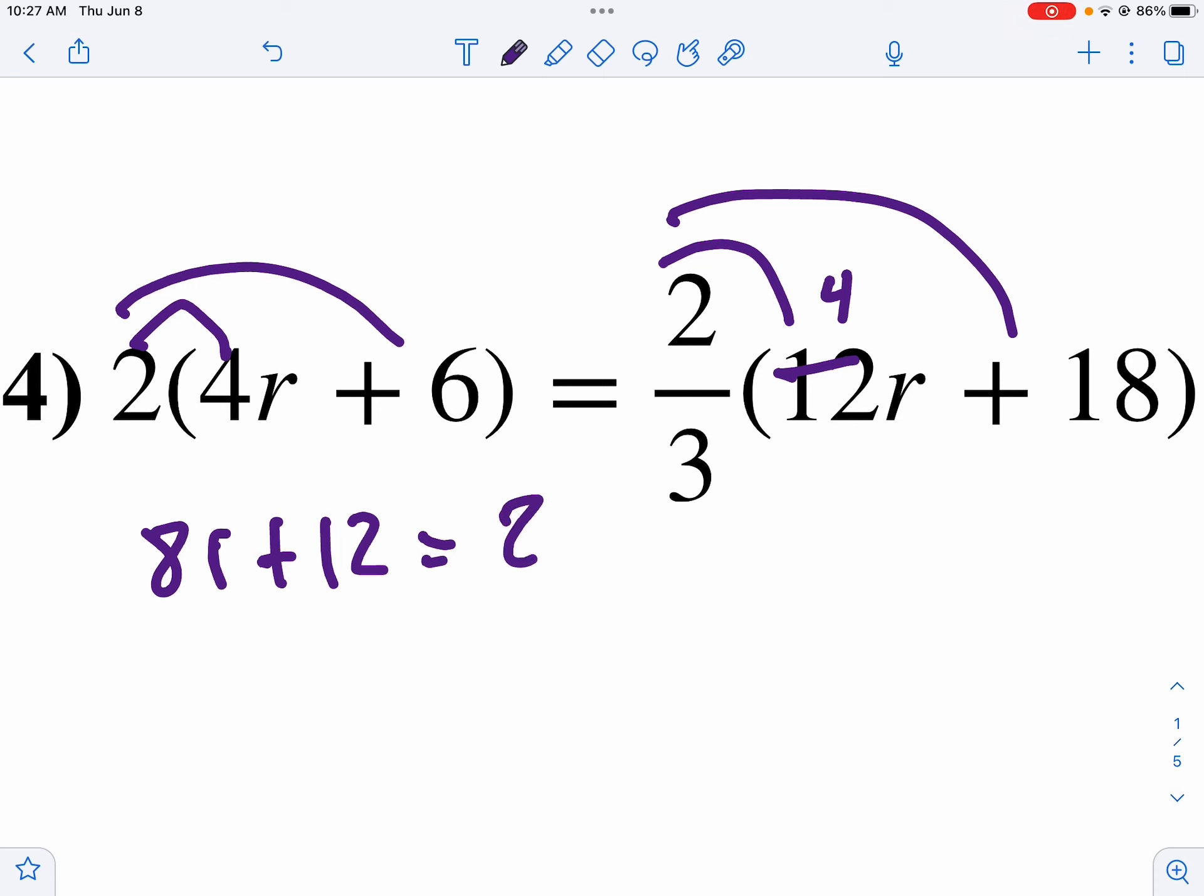Because notice they kind of get rid of themselves. 3 goes into 12 four times, so 4 times 2 is 8r. 3 goes into 18, 6 times, 6 times 2 is 12.